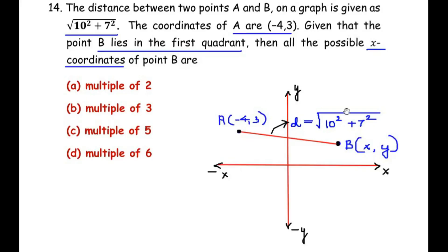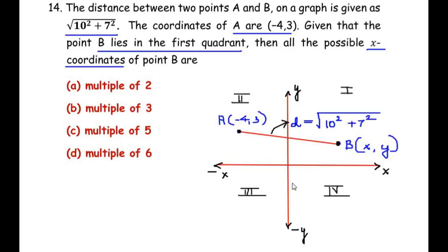Point B lies in the first quadrant. The first quadrant is on the upper-right side. The second quadrant is on the upper-left side, the third quadrant is lower-left, and the fourth quadrant is lower-right.